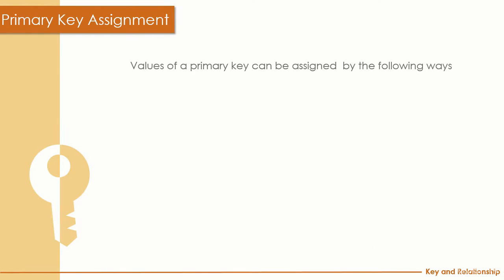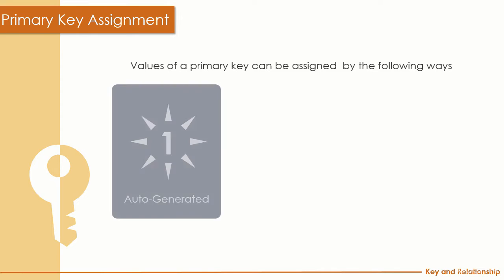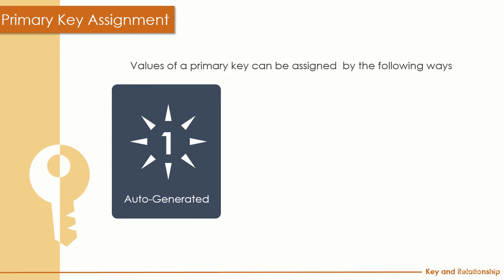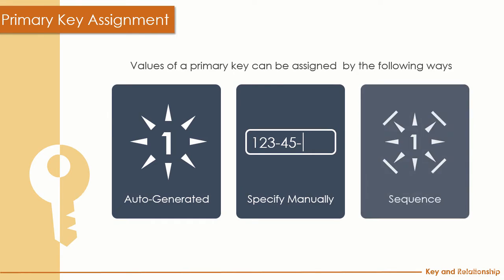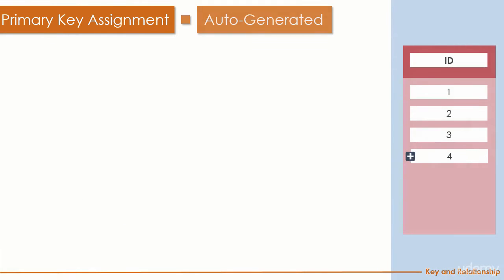Regarding the primary key, we also need to think about how to assign its value. Basically there are three popular approaches: you can use a computer-generated ID, you can specify the ID manually in your program, or you can use a sequence.